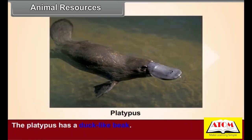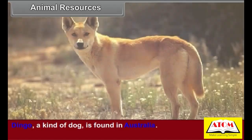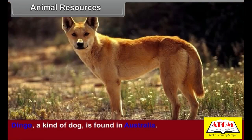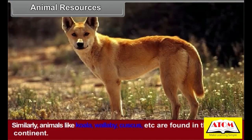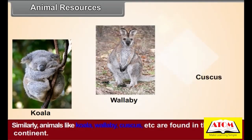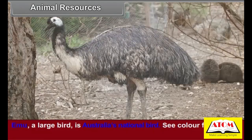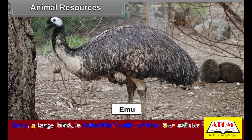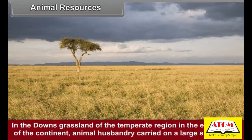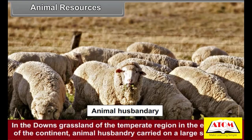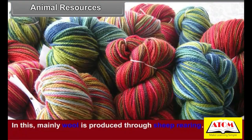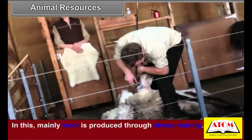The platypus and echidna have a distinctive characteristic — though they are mammals, they lay eggs. The platypus has a duck-like beak. The dingo, a kind of dog, is found in Australia. Animals like wallaby, cuscus, and others are also found on this continent. The emu, a large bird, is Australia's national bird. Animal husbandry is carried on at a large scale, mainly producing wool through sheep rearing.